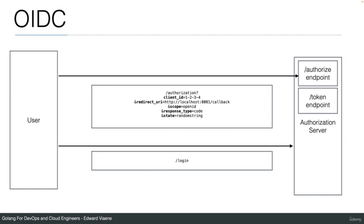Now we implement the login endpoint. The authorization endpoint redirected us to /login with a session ID. The login endpoint needs to handle both GET (showing the login form) and POST (processing credentials). I already have a login.html template using Go's embed feature — the templates directory is embedded in the binary using '//go:embed templates' so we don't need to supply it separately.